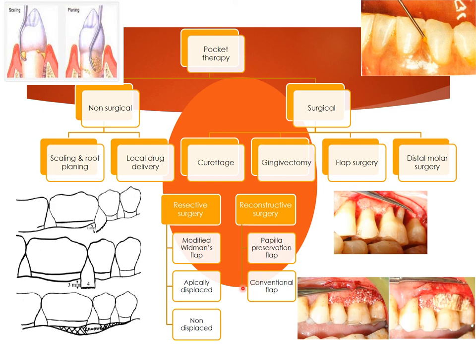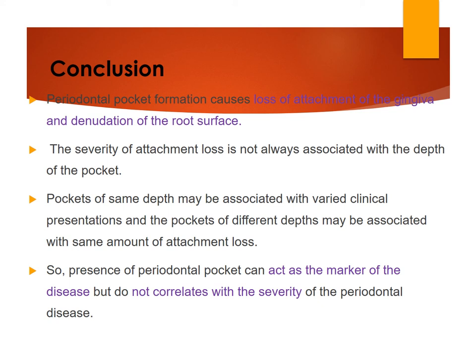In conclusion: periodontal pocket formation causes loss of attachment with the gingiva and degradation of the root surface. The severity of attachment loss is not always associated with the depth of the pocket — pockets of the same depth may be associated with varying clinical presentations, and pockets of different depths may be associated with the same amount of attachment loss. The presence of a periodontal pocket can act as a marker of disease but does not correlate directly with the severity of periodontal disease.